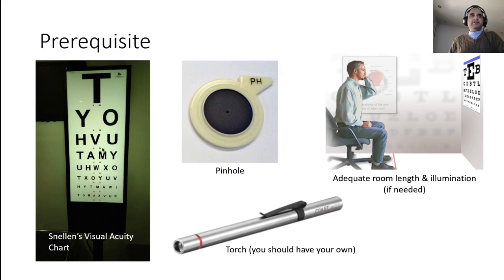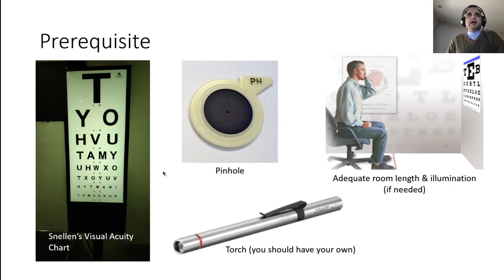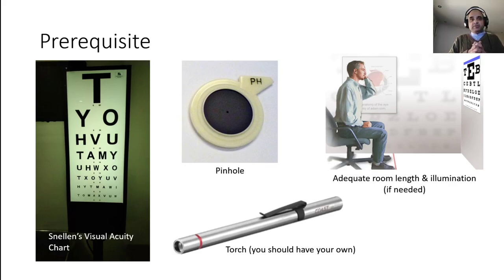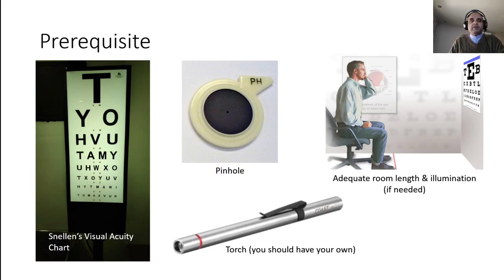You should have your own torch, as it is required when a patient's vision is so poor they can't even see hand movement. The general procedure: the patient sits at six meters, the chart is illuminated, you take consent, greet the patient, explain what you're going to do, and ask whether the patient wears glasses for distance.